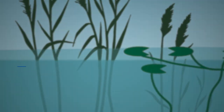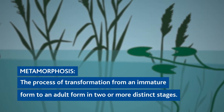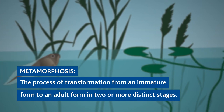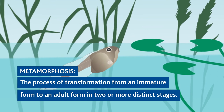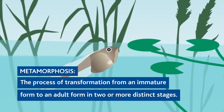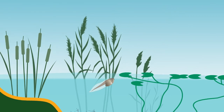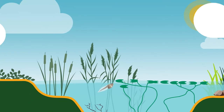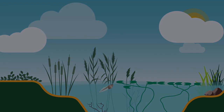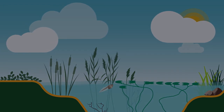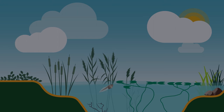As tadpoles grow, they gradually undergo a process called metamorphosis. Many species initially have external gills when they hatch; however, these are soon covered under skin flaps. Sunlight and warming water temperatures are important components of any successful frog pond. Tadpoles in cold, shaded ponds will generally develop much more slowly than those in open, sunny sites and warmer climates.